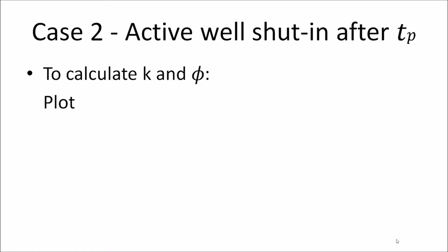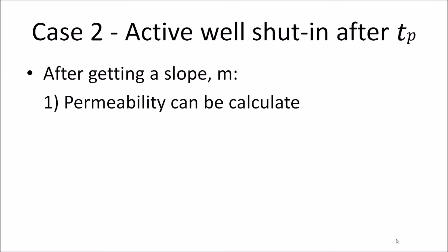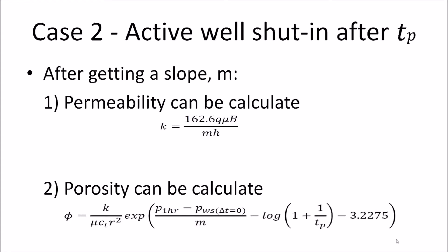To calculate permeability and porosity, first, we must plot pressure versus TP plus delta T over delta T. And then, from this plotting, it will yield a straight line, where from this straight line, we can get a slope. From the slope, we can calculate permeability and porosity. For calculating permeability, we can use this formula. For permeability equal to 162.6, multiply to flow rate, multiply to viscosity, multiply to formation volume factor. And then, divide by slope, multiply to height. For porosity, we can use this formula. Where P at 1 hour is obtained from the semi-locked straight line at delta T equal to 1 hour.